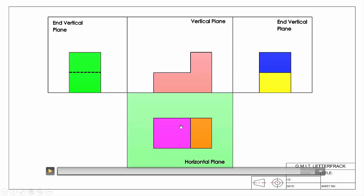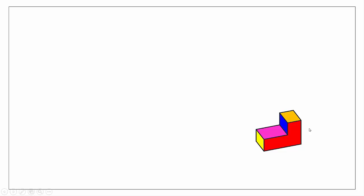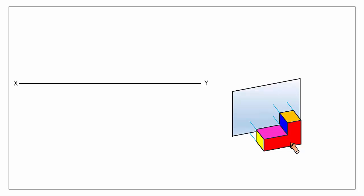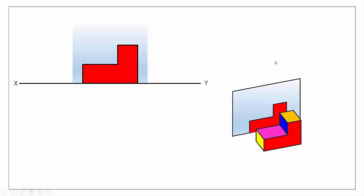Now let's look at how we actually draw this on our sheet. Here we have our 3D object. Start by drawing in a ground line or baseline known as the XY line — that's our starting base point. Generally, start by drawing the view that best gives an idea of the shape of the object. This object is roughly an L-shape on its side, so we look straight in at the red surface. We project each edge back parallel with our viewing direction onto the vertical plane, giving us our front elevation.